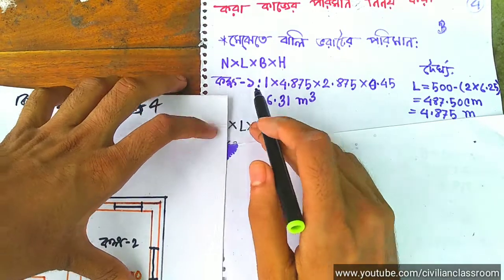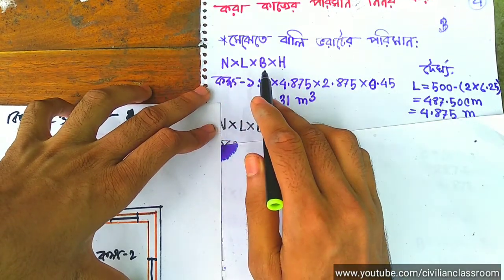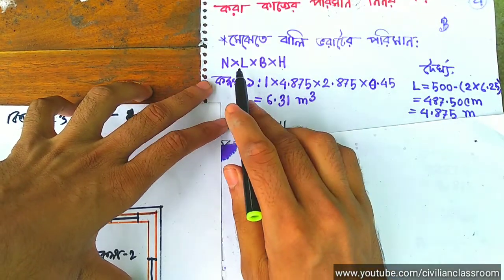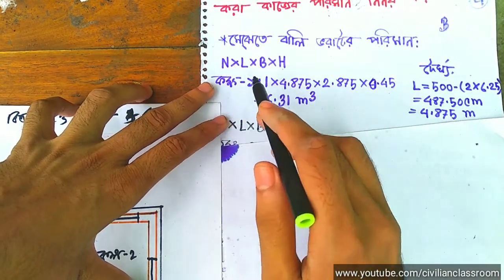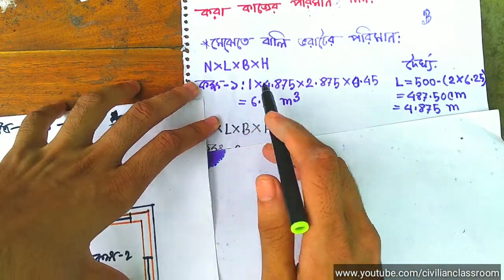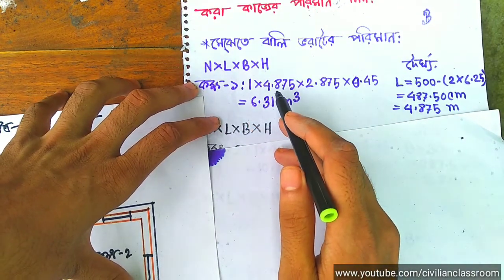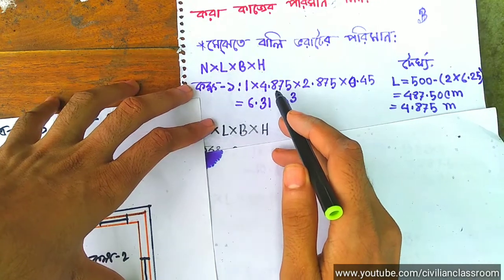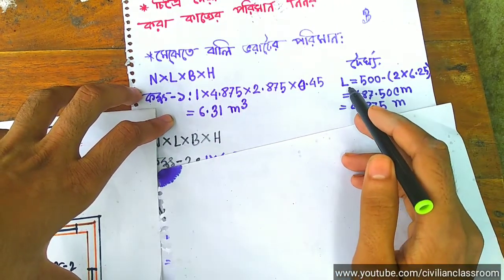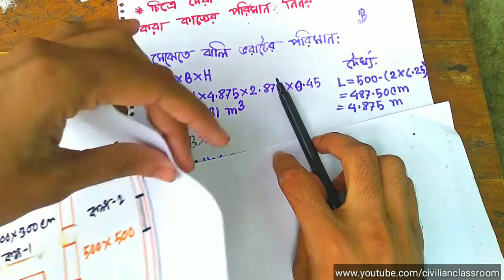I will call L x B x H. Here we show that n1 is 4.875. In second, this is L; L is 5.